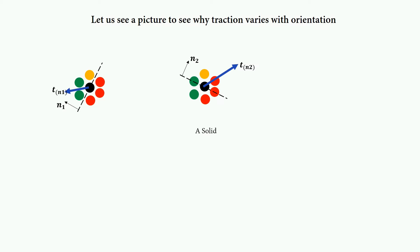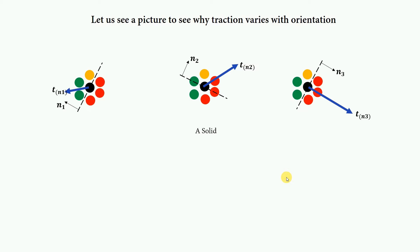Let's take another orientation, n3. The traction defined on the plane with normal n3 will be even higher because all three neighbor types contributing to the traction are present on the opposite side. That's why we get the maximum traction for the plane defined by n3. Each particle is loaded differently due to the nature of the loading, the geometry of the solid, or the material properties — and this cumulative effect reaches our particle of interest.